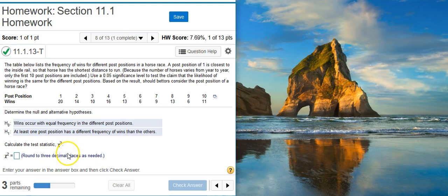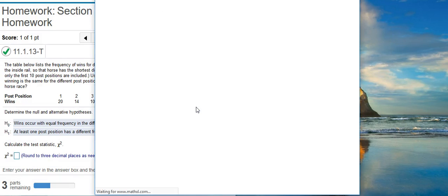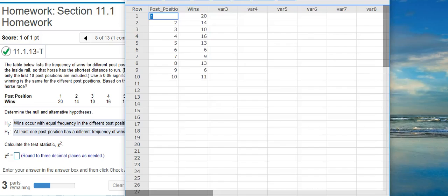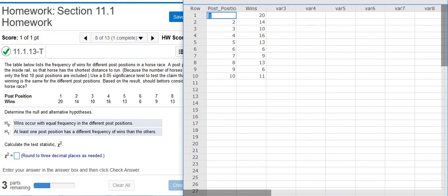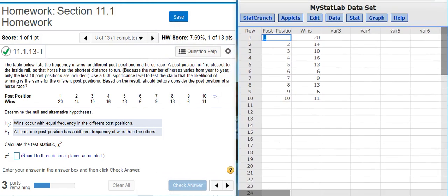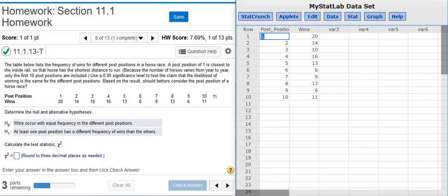Now the second part asks for the chi-squared test statistic. So to do this, I'm going to take the data and dump it into StatCrunch. Okay, here's my data. It's in StatCrunch. I'm going to resize this window so we can see everything a bit better.